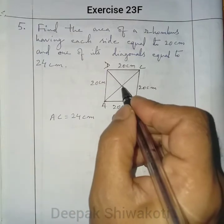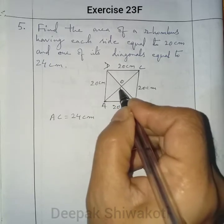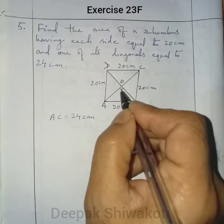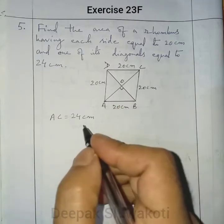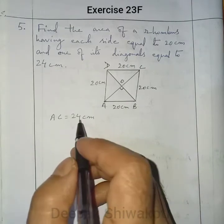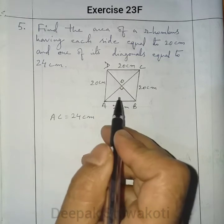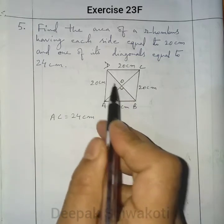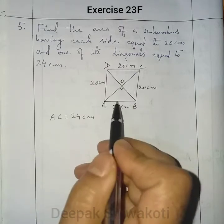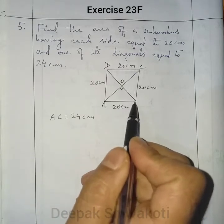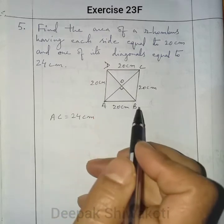The intersection point is named as O. We know that the intersection of the diagonals will form a right angle. We have to find the area of this rhombus. To find the area of the rhombus, we should know the length of both diagonals. But we know only the length of one diagonal, so we have to find the length of the other diagonal, that is BD.